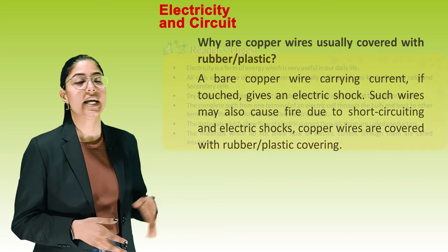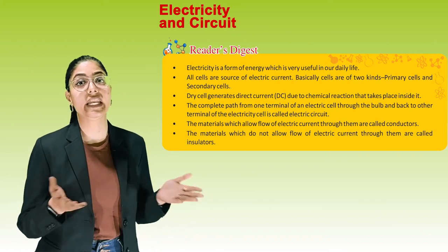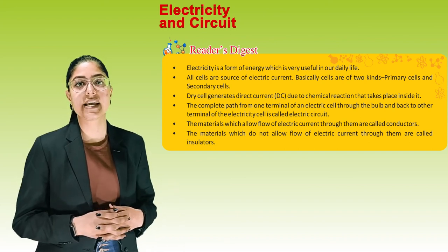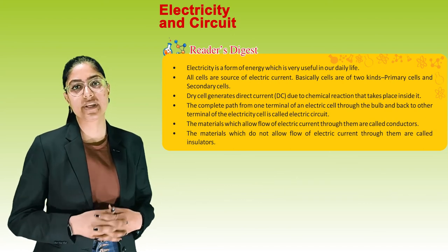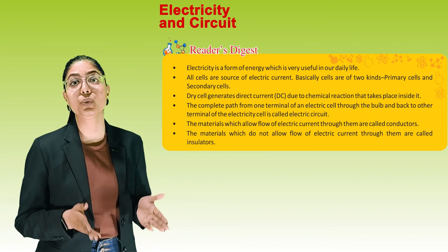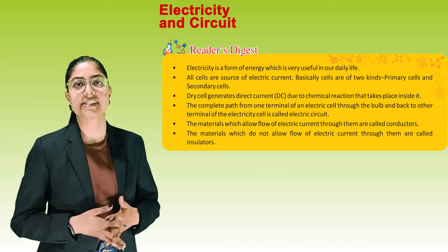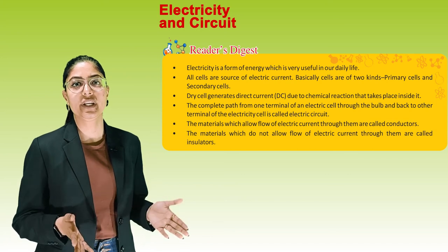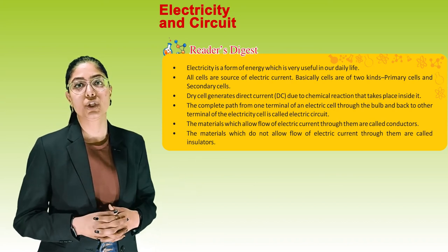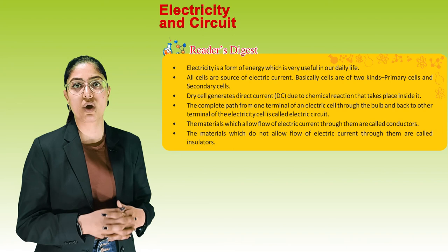Quick revision: Electricity is a form of energy which is very useful in our daily life. All cells are a source of electric current — basically cells are of two kinds: primary cells and secondary cells. Dry cells generate direct current (DC) due to chemical reactions inside them. The complete path from one terminal of an electric cell through the bulb and back is called an electric circuit. Materials that allow flow of current are called conductors; those that do not are called insulators.